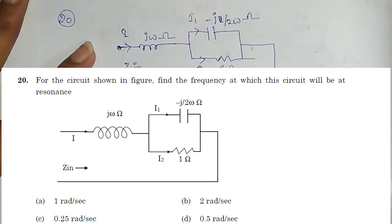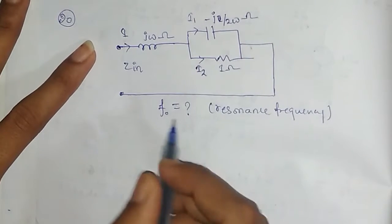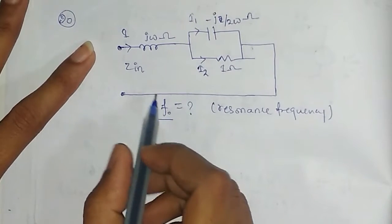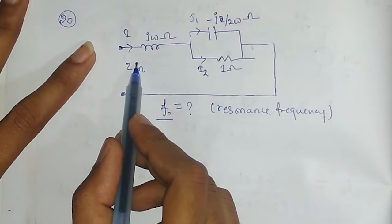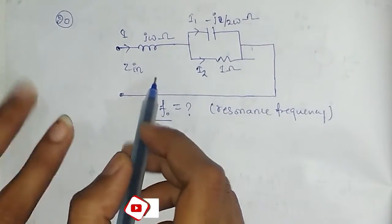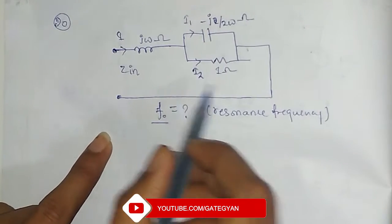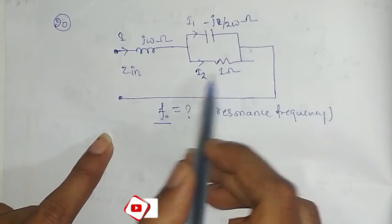So to get the resonant frequency, first of all, what I will do, I will find the Z equivalent of the circuit and then I will equate the imaginary part of this Z equivalent to 0 to get this resonant frequency.